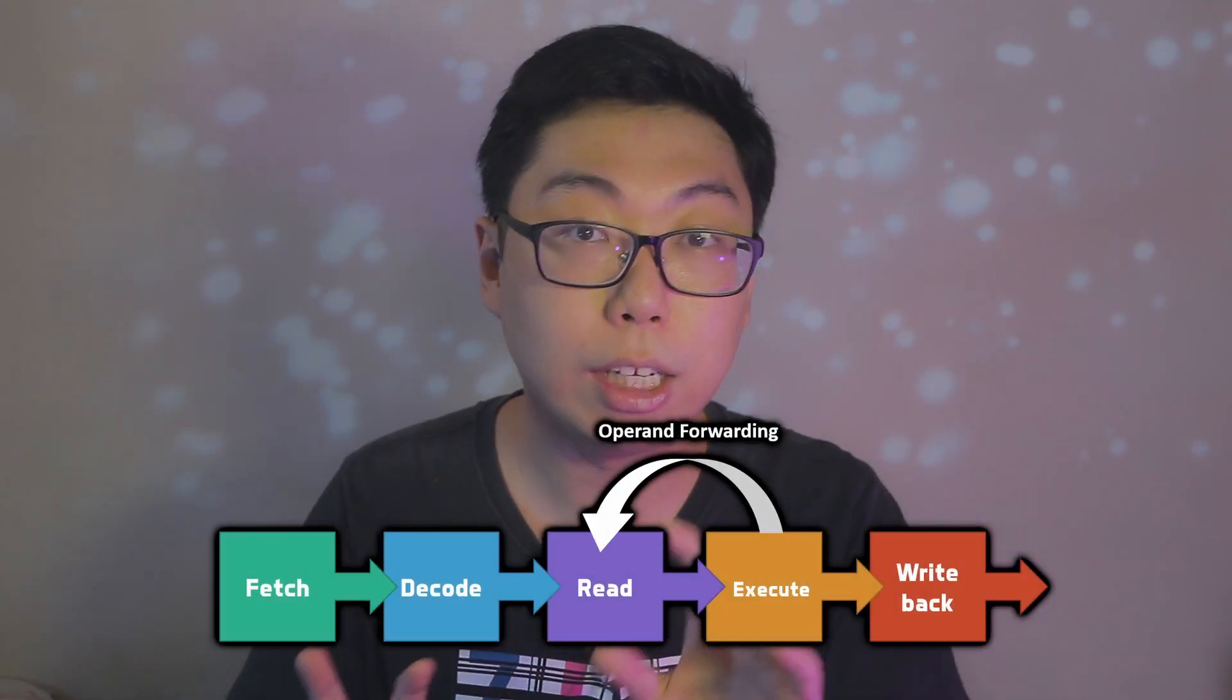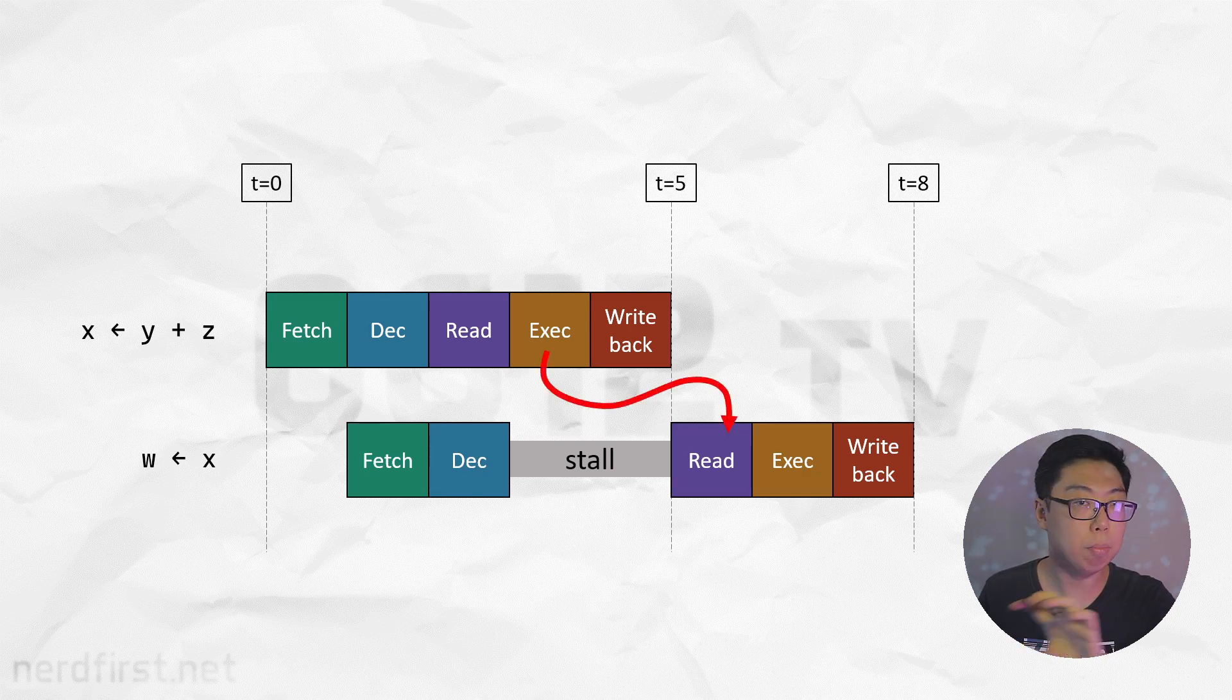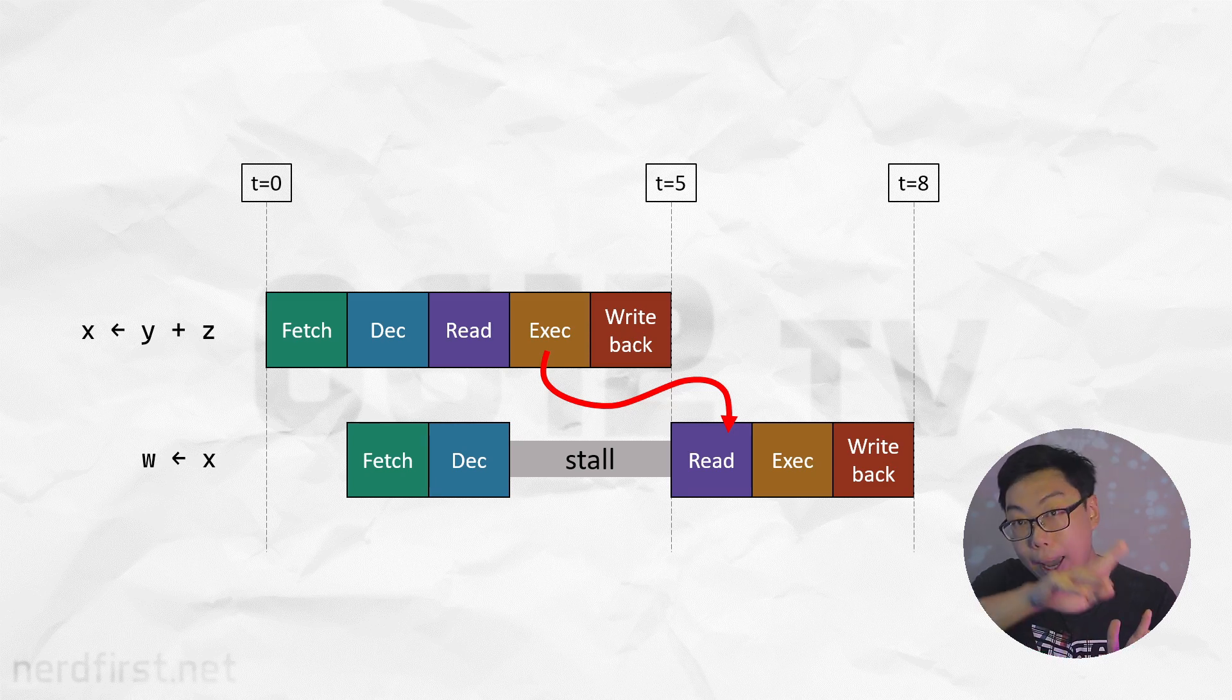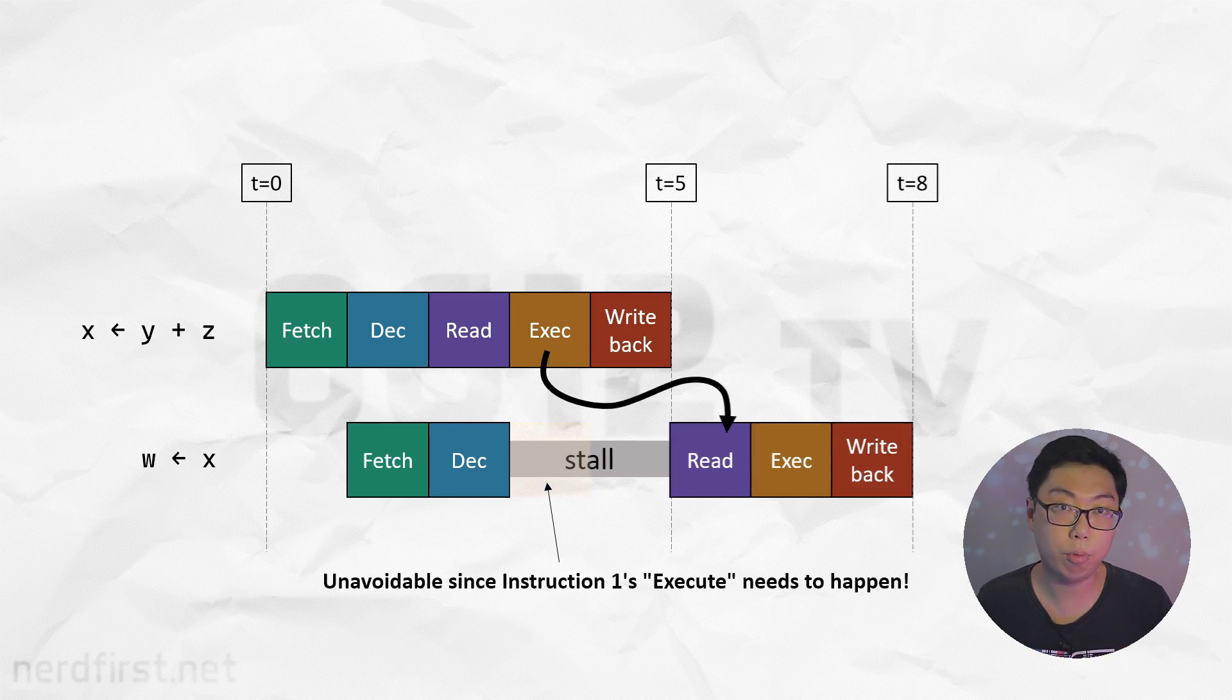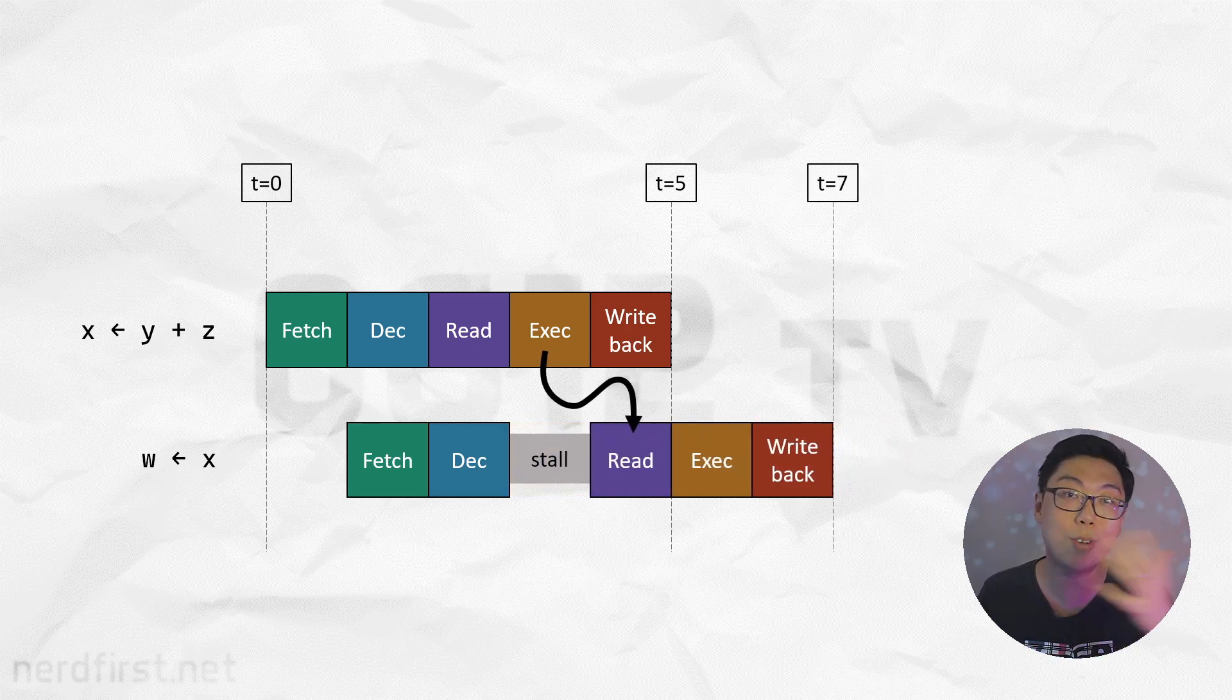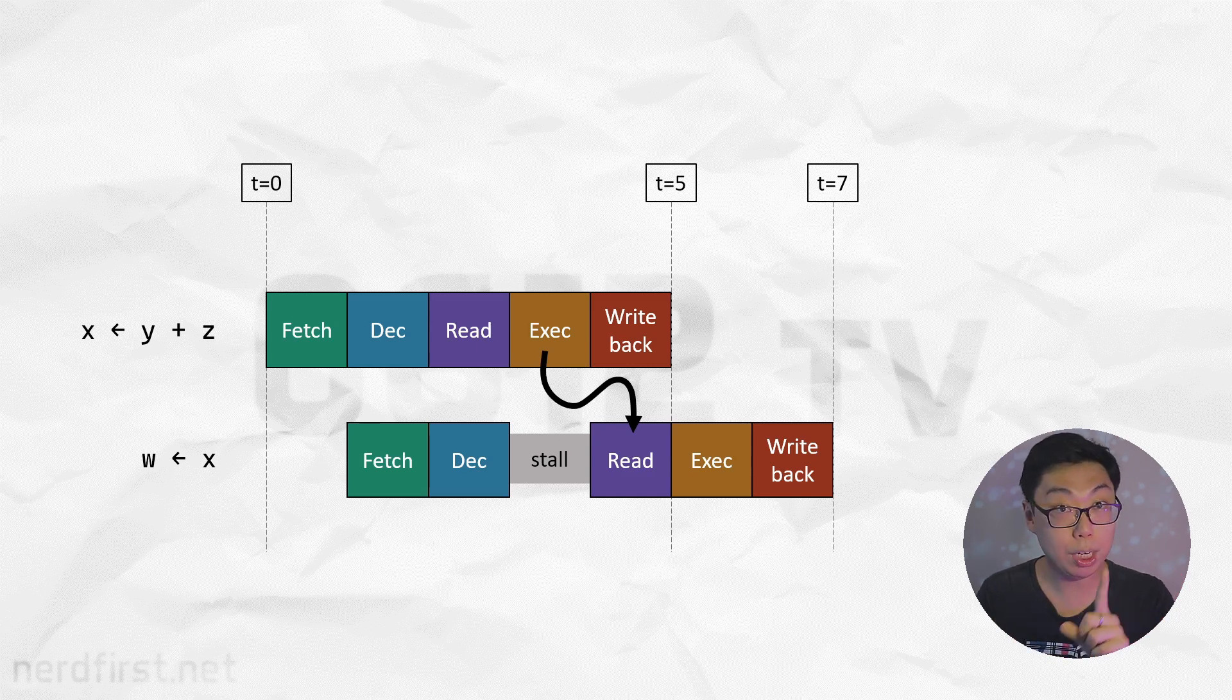Of course more sophisticated strategies can be employed here. One such solution is operand forwarding. Think of this as a secret passage that connects different pipeline stages together. Information can take that shortcut and jump to a later stage ahead of time. Let's try the same example using the same pipelining model as before, but now imagine there is some means of communication going from the execute stage back to the read stage. The second instruction still needs a stall at t equals 3. You can't avoid that since the answer hasn't been calculated yet. However, we can avoid waiting for the callback if we simply send that answer along that secret passage to the read stage at the very moment in which it's ready. Thanks to this, we only need to stall for one unit of time, and the two operations now finish at t equals 7 instead.